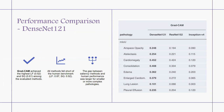Looking at performance comparison starting with DenseNet, Grad-CAM achieves the highest localization fidelity of 0.52 and segmentation quality of 0.61 among the evaluated methods. However, all methods fall short of the human benchmark, which is 0.87 on localization fidelity and 0.92 on segmentation quality. The gap between the saliency methods and human performance was larger for smaller and more complex pathologies.